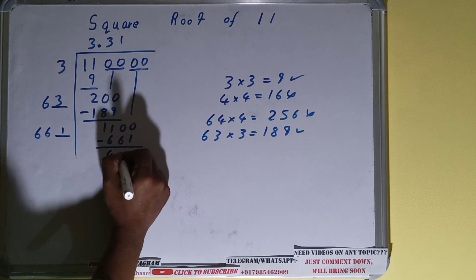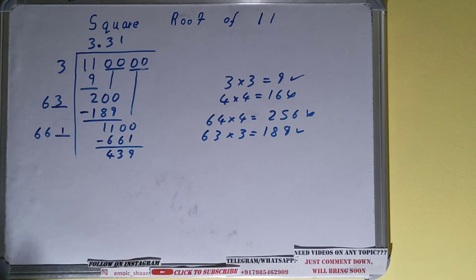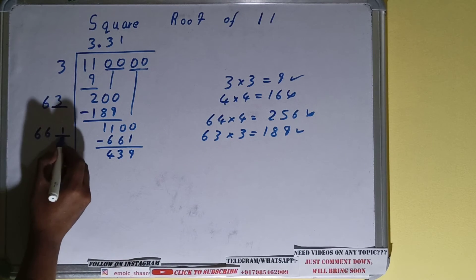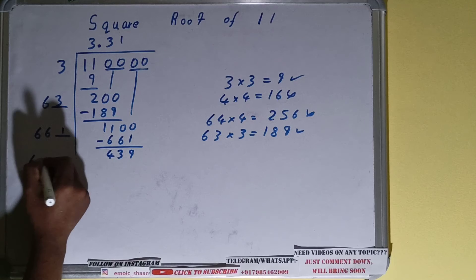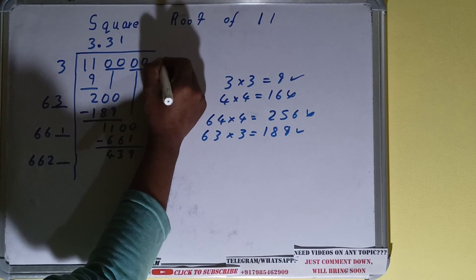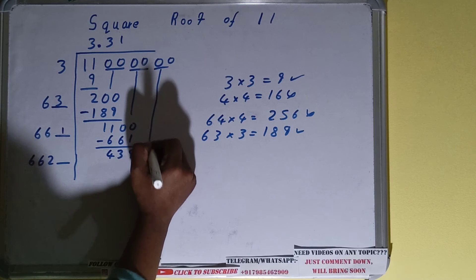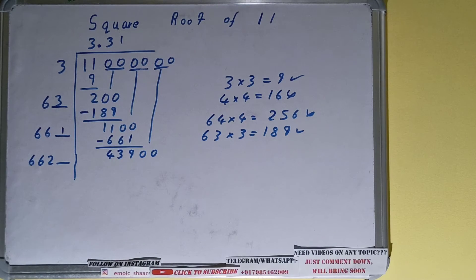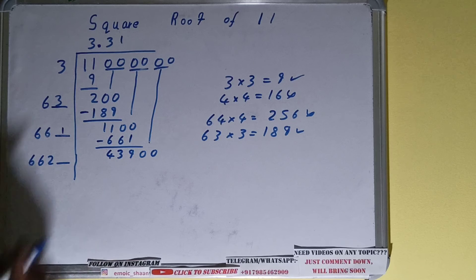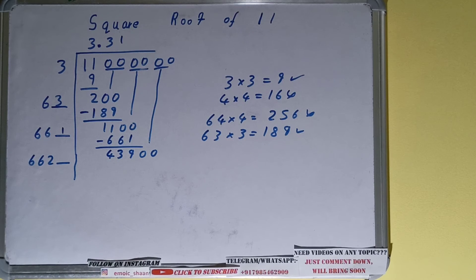Again, same thing we need to do. 661 plus 1 is 662, one digit extra. And here we'll consider one more pair of zeros because the number is smaller, and we'll have 43900. We know that 6 sevens are 42, right? So let's consider 7.